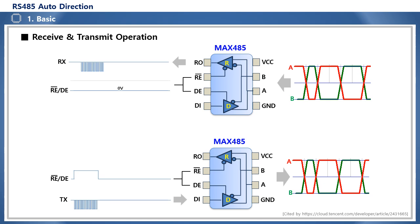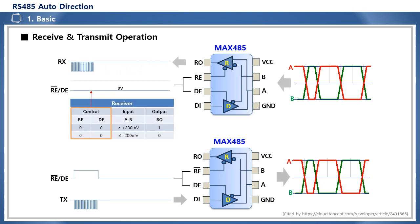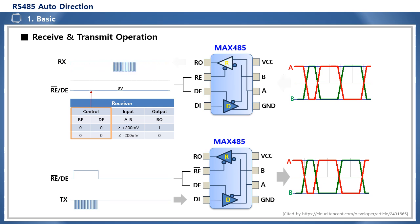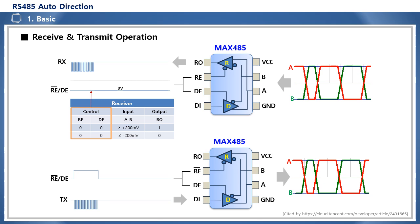Now, let's look specifically at the signal flow in receive mode and transmit mode of MAX485. When logic low is applied to the direction control pins RE and DE, according to the reception mode function table, if both RE and DE pins are low, MAX485 enters reception mode. At this time, signals from the A and B communication lines, which are external interfaces of 485, are received, converted into a logic-level RX signal through the IC internal receiver R, and transmitted to the MCU side serial reception port.